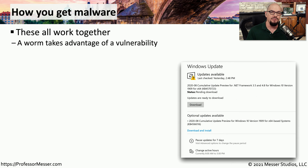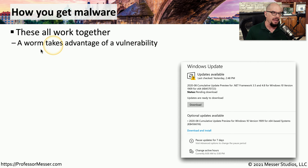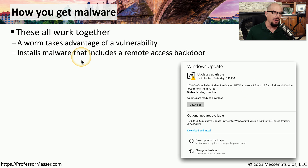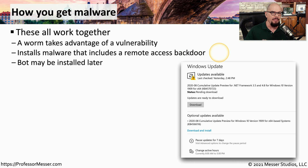There are many different ways for a system to be infected with malware. One common way is to have a worm that takes advantage of a known vulnerability in your system, which doesn't require any type of user intervention at all. To prevent these worms, you should always make sure you're running the latest updates for your operating system. Once malware is executed on your system, it might install software that includes a remote access backdoor, which allows it to call out to a separate server so that additional malware can be downloaded and installed on your computer.